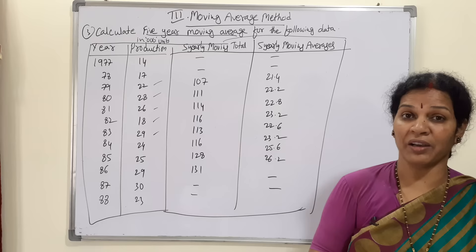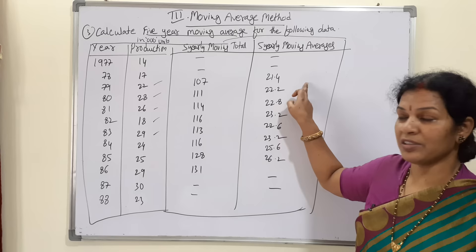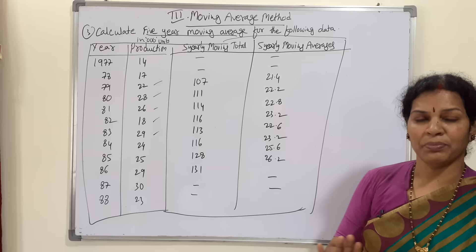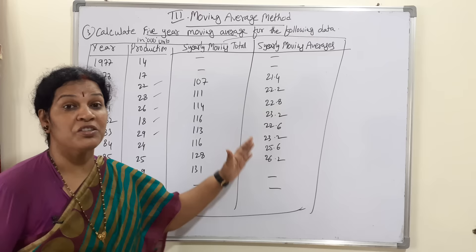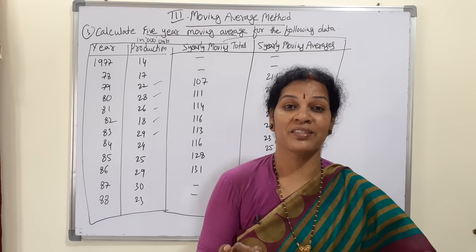Simple problem — this is all they will ask you, whether it's three-year or five-year moving average. First five years totaled, average is 107 divided by 5. Leaving one year, total the next five, and so on — moving data total, then average. That's it. If you get this in the exam, don't leave it by choice — attempt it because you will get full marks. There is no complication.